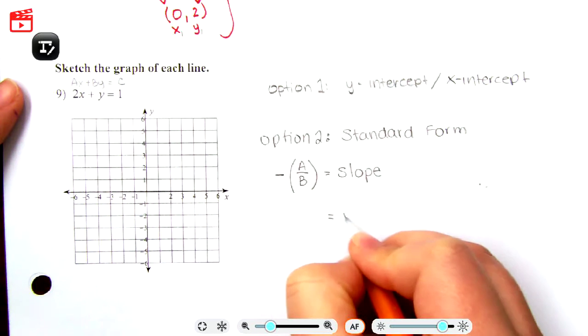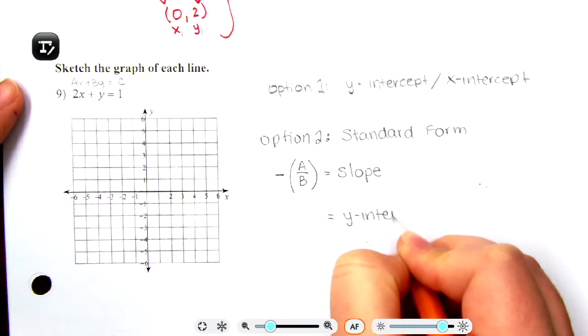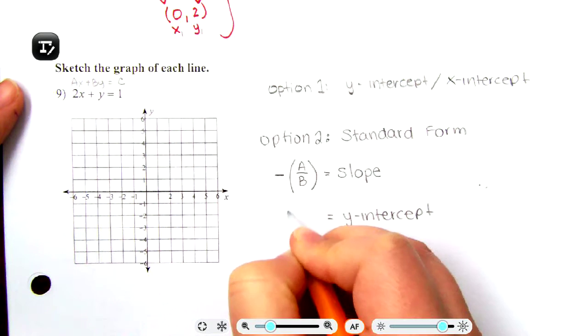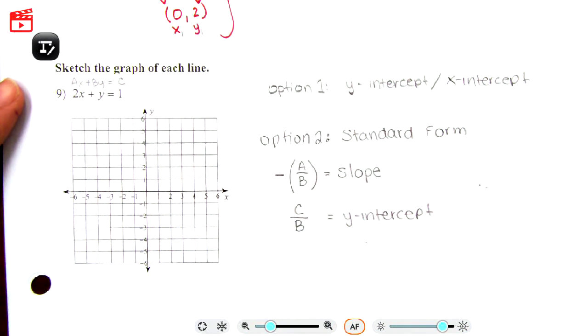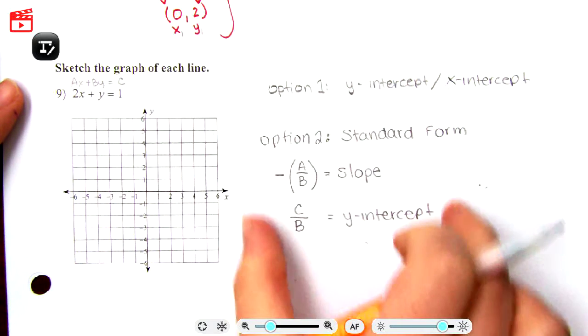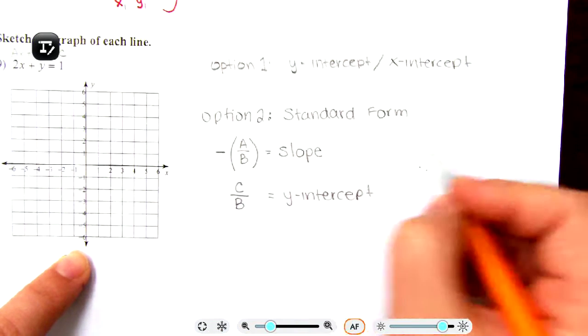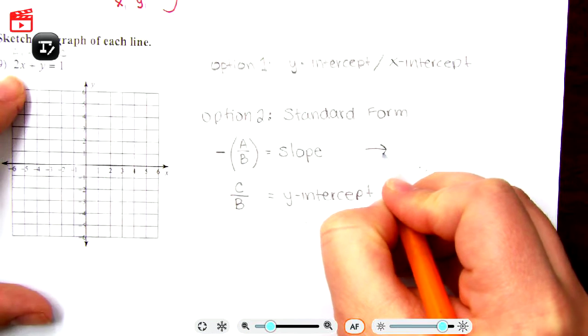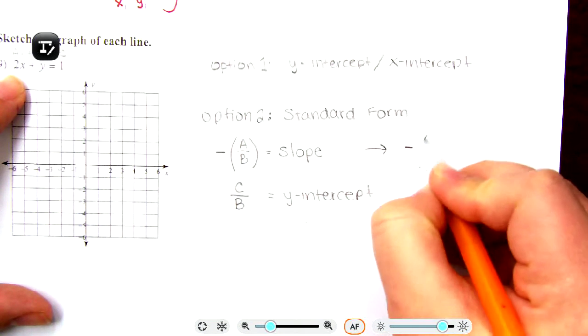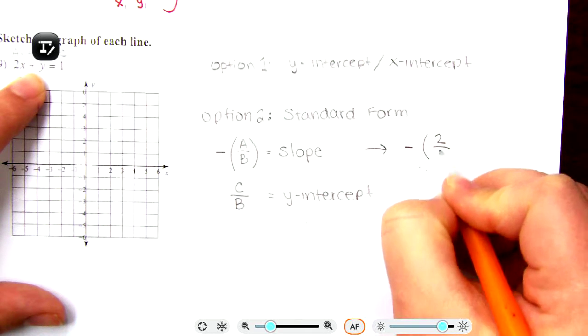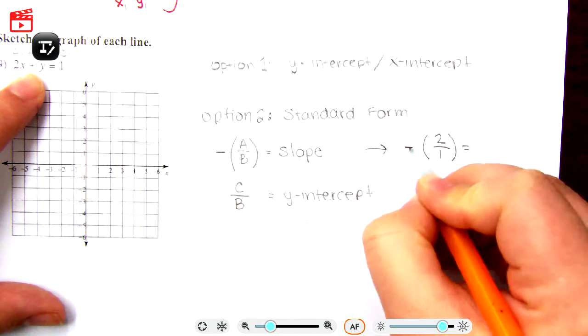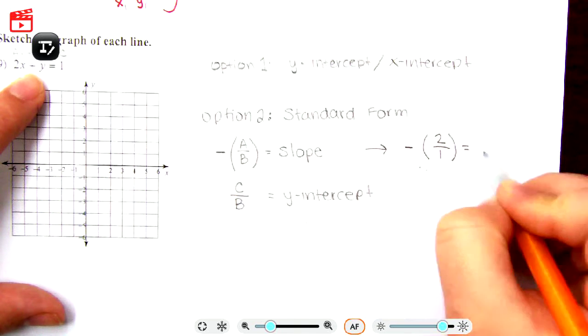Our y-intercept is c over b. This right here is in my opinion the easier way, as long as you remember this. You're good, you don't have to do too much work with the x and y intercept. So the opposite of a over b, in this case a - the opposite of a is 2, b is 1. So we have the opposite of a positive 2 over 1, or negative times 2, so we just have 2 over 1 as our slope.